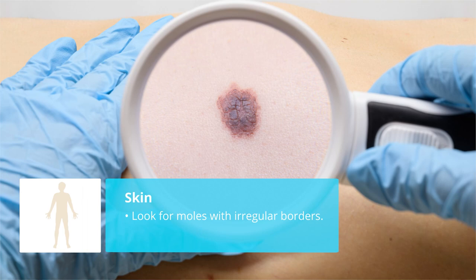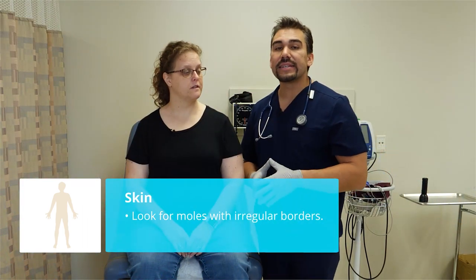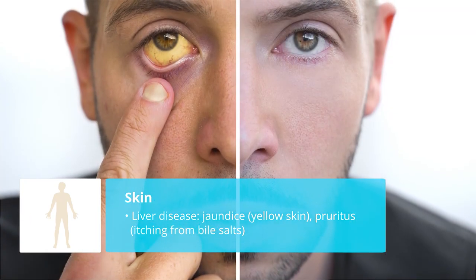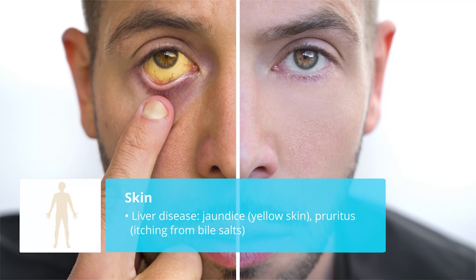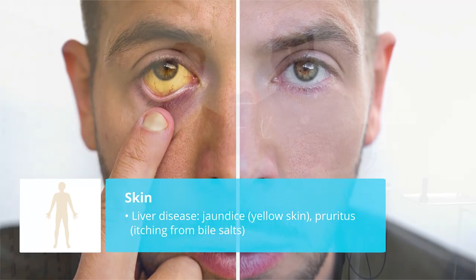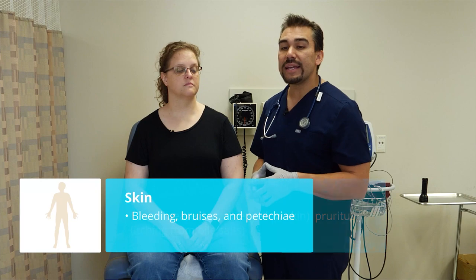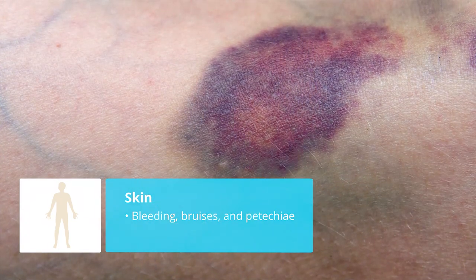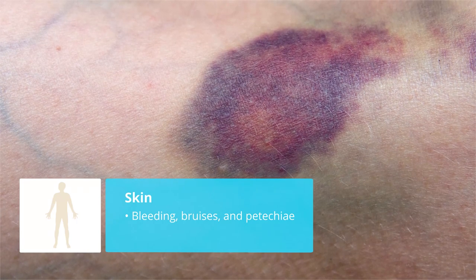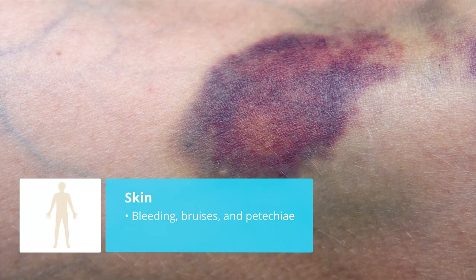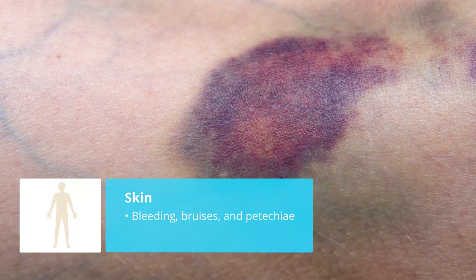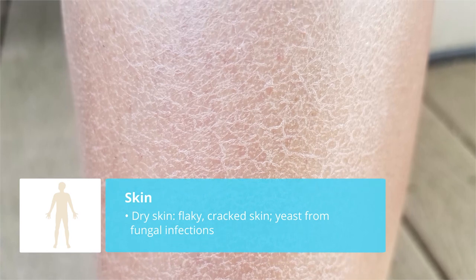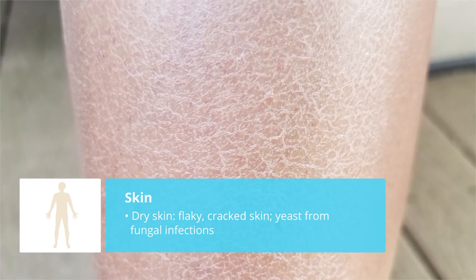A common finding is liver disease patients — either cirrhosis or hepatitis. We'll see jaundice, that yellow skin, and we might even see pruritus — that itchy skin — from bile salts. Number two is bleeding: if your patient is on anticoagulants or has hemophilia, we want to assess for bruises and petechiae — those little red dots all over the body. Another finding, especially in elderly patients, is dry, flaky, cracked skin, and even yeast or fungal infections.